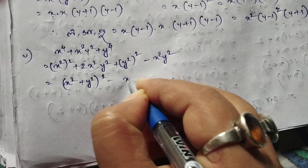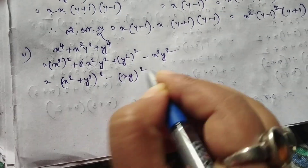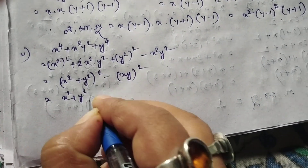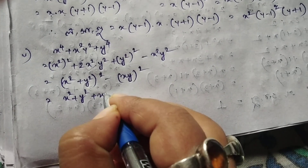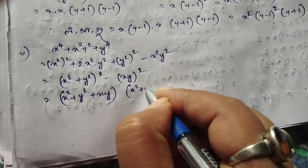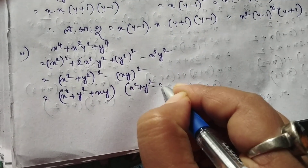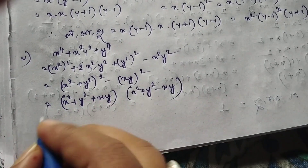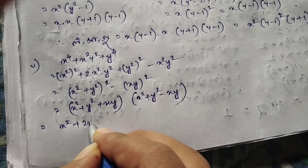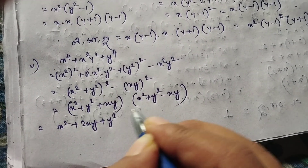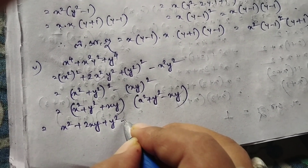Minus x squared whole square: x squared plus y squared plus xy. The other side is x squared plus y squared, minus x squared. Now the other side is x squared plus y squared. x squared plus 2xy plus y squared. Minus x squared whole square.